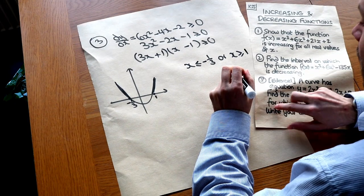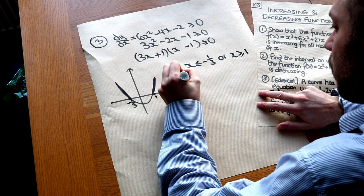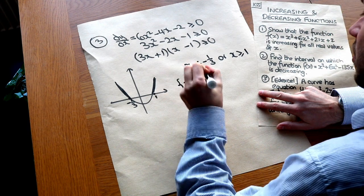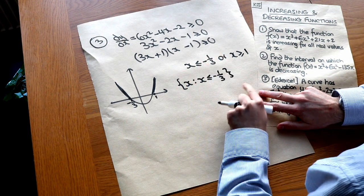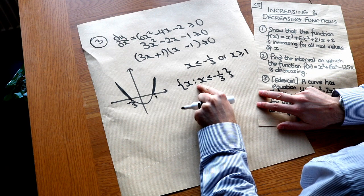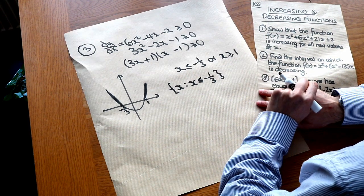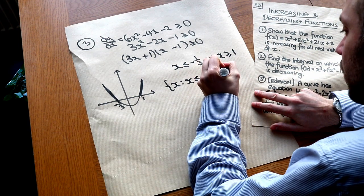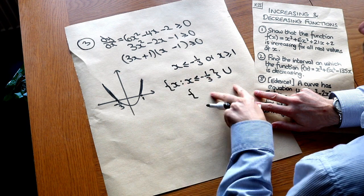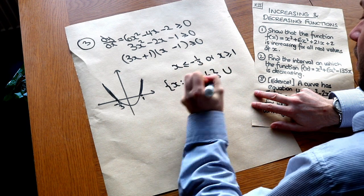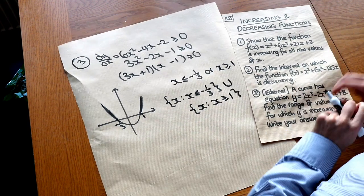The question wants the answer in set notation. We write this as the union of two sets: {x : x ≤ −⅓} ∪ {x : x ≥ 1}. The colon means 'such that', and the union operator combines both regions. That is the final solution.